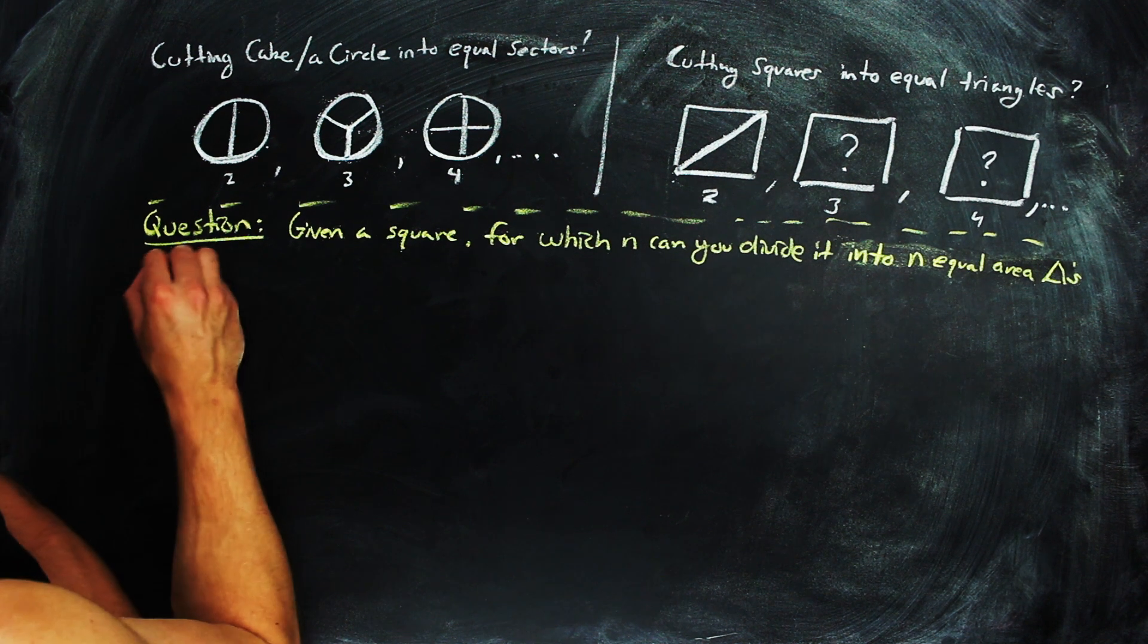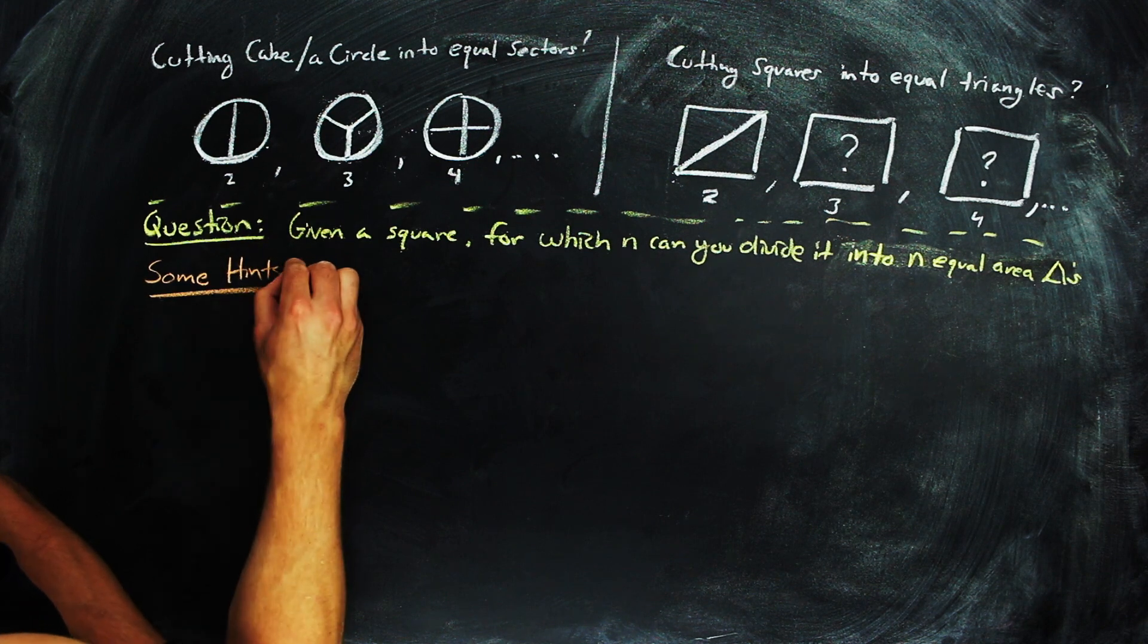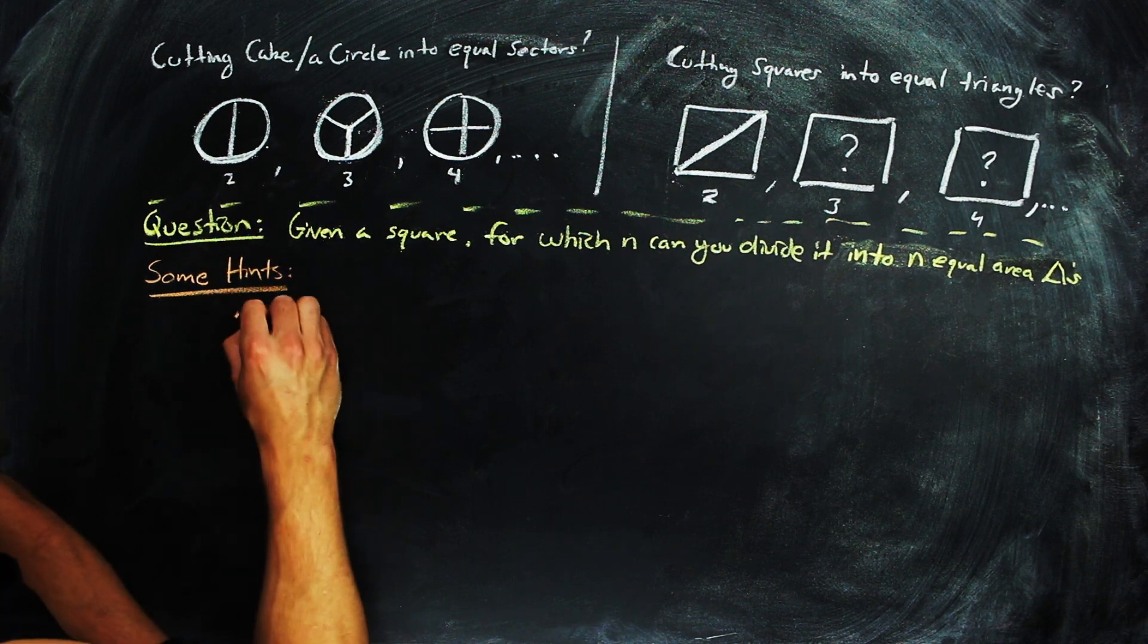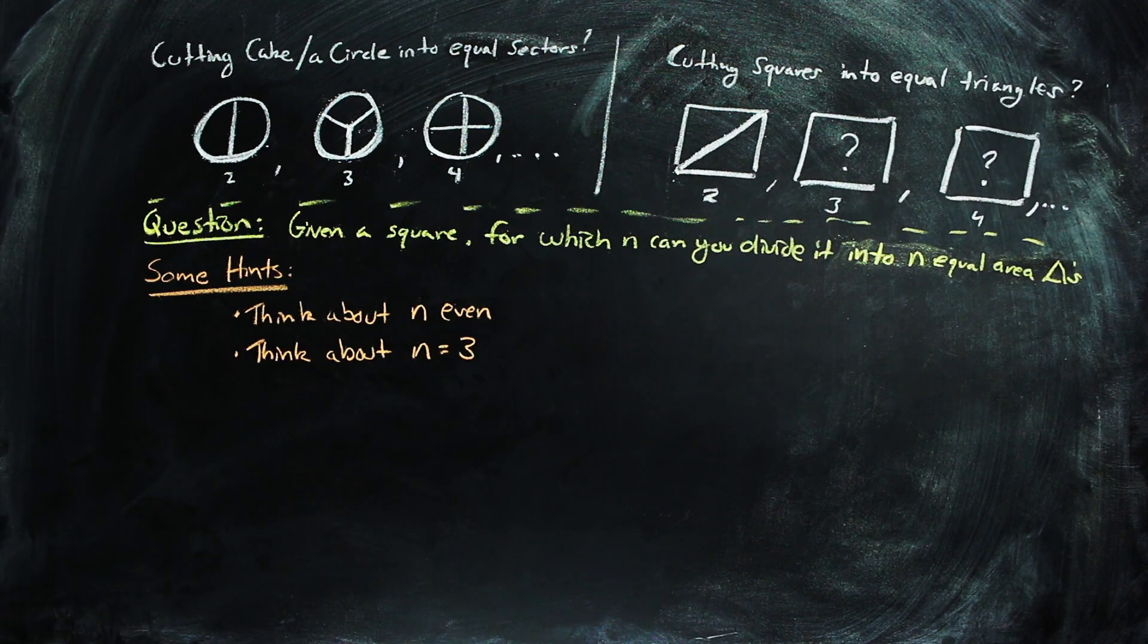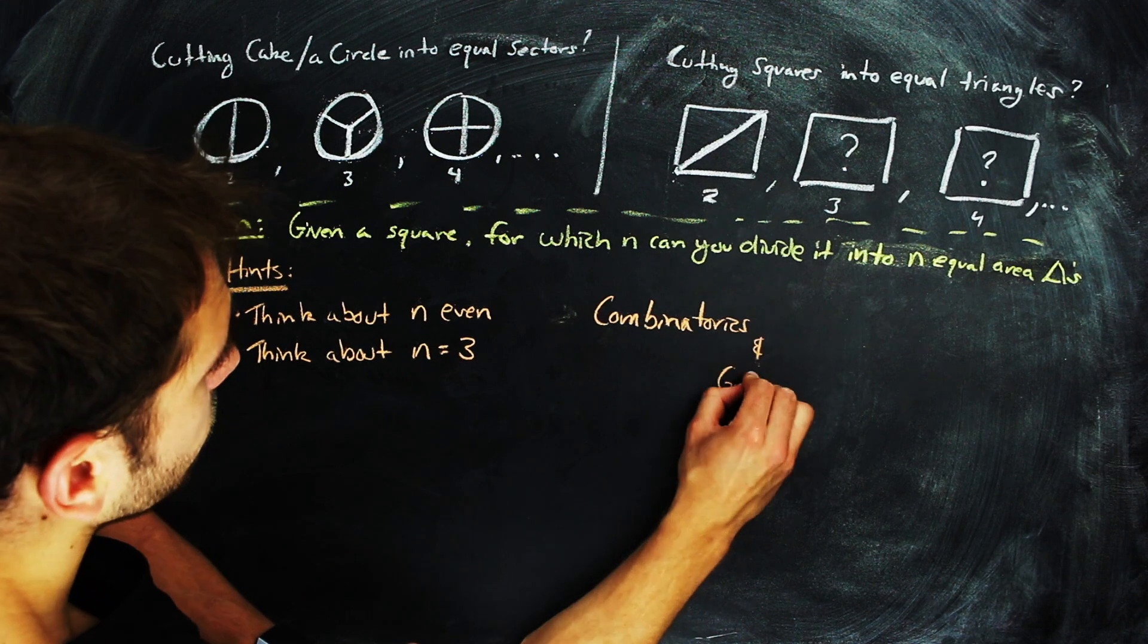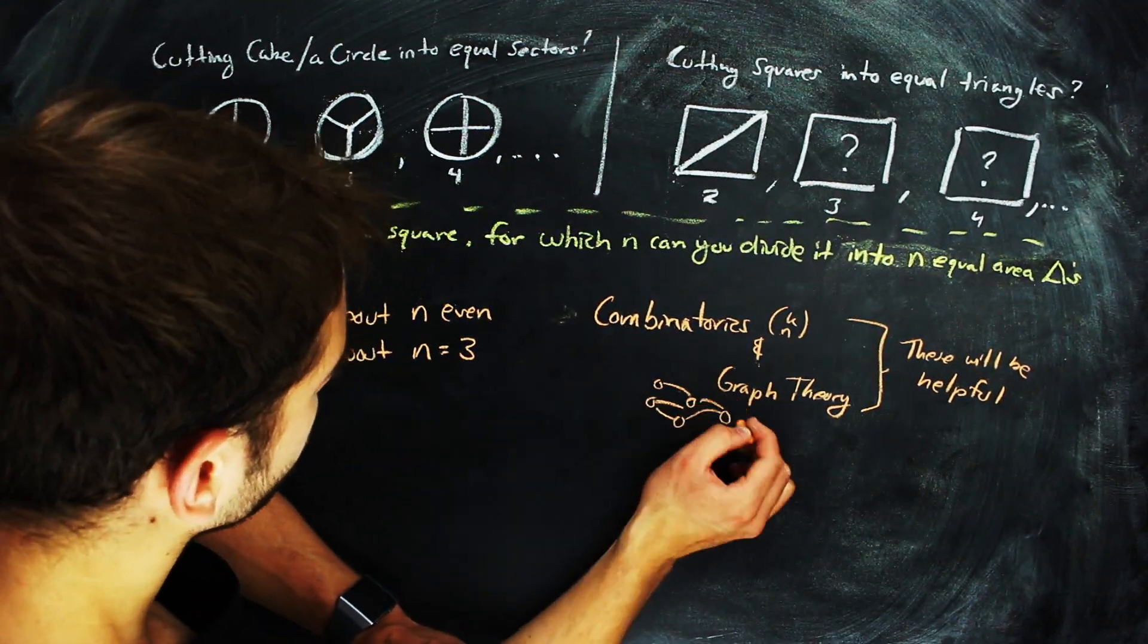We're going to spend the entire video answering this question, so if you want to try and address it on your own, but don't know where to start, I'm going to recommend thinking about the case of n being even first, and then think about the case where n is 3. We're also going to start with some combinatorics and graph theory, so it might help to think about those areas too.